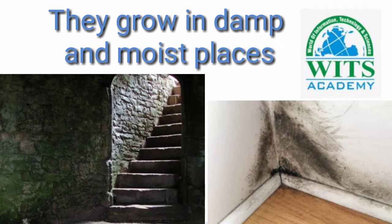The meaning of 'damp' is moisture — something that is wet. You can see we have two pictures: one is of a house corner and one is of a very old house. You can see on that wall there is a green shadow — that green color is actually fungi, and fungi grew there because there was moisture and the place was damp.